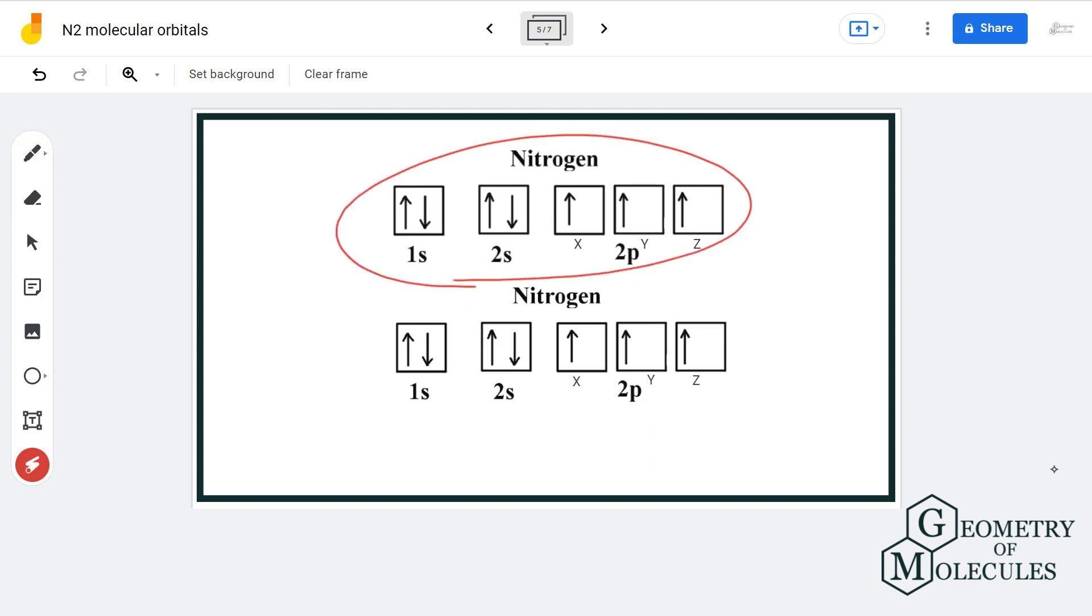This is what the atomic diagram of a single nitrogen atom looks like. When two nitrogen atoms combine to form N2 molecule, these orbitals will combine and form molecular orbitals.